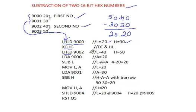After that, I have to load the second number — 40 and 50 — from memory locations 9002 and 9003 into the HL register pair again. For that I am using the same instruction LHLD 9002. This loads 40 and 50 into HL: L takes 40 and H takes 50. Then we will start the subtraction with the help of more instructions.